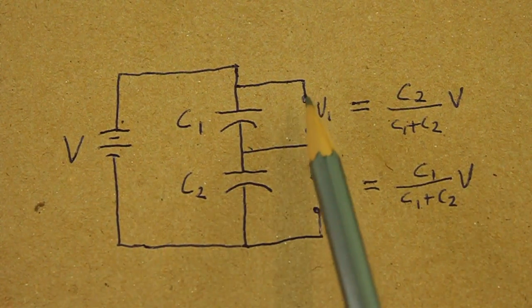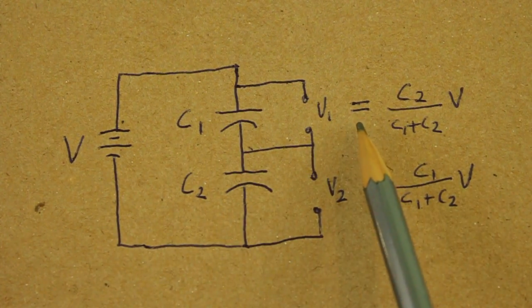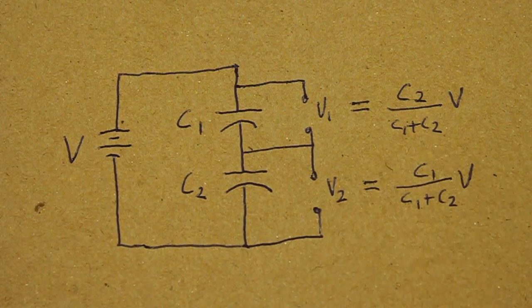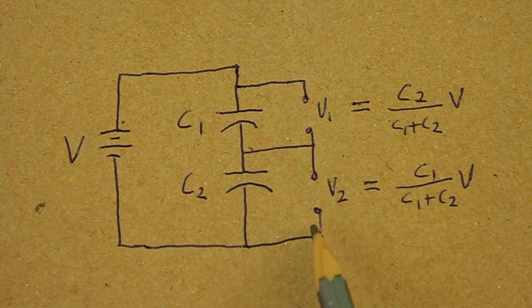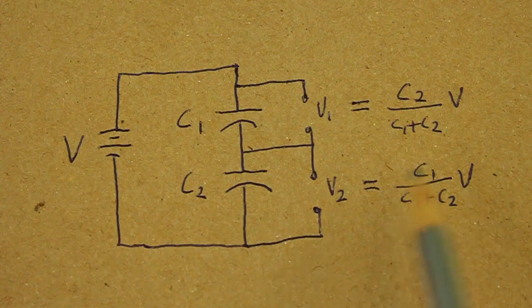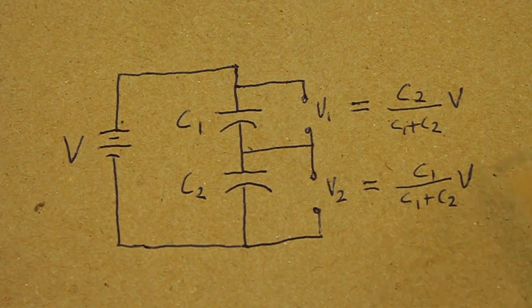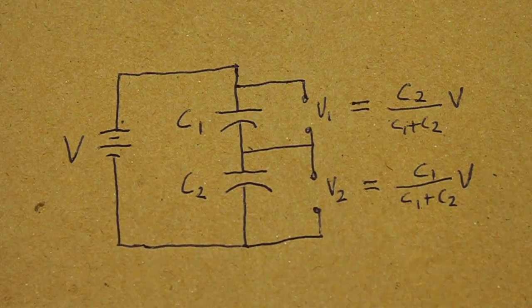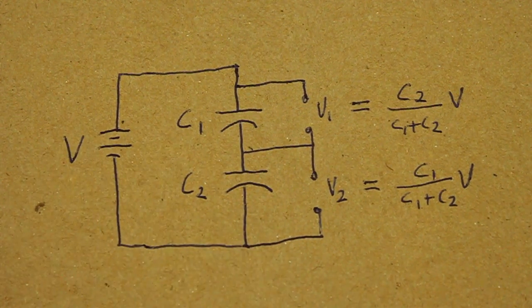For example, the voltage between the terminals of capacitor 1 is equal to C2 divided by C1 plus C2 times the input voltage V. And the voltage between the terminals of capacitor 2 will be C1 divided by C1 plus C2 times the input voltage. Of course, the sum of V1 plus V2 must be equal to the input voltage V.